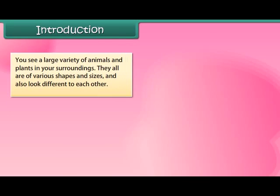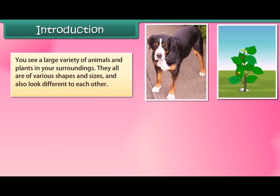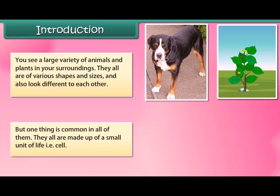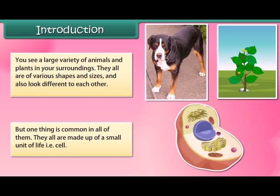You see a large variety of animals and plants in your surroundings. They all have various shapes and sizes and also look different from each other, but one thing is common in all of them: they are all made up of a small unit of life, that is, the cell.